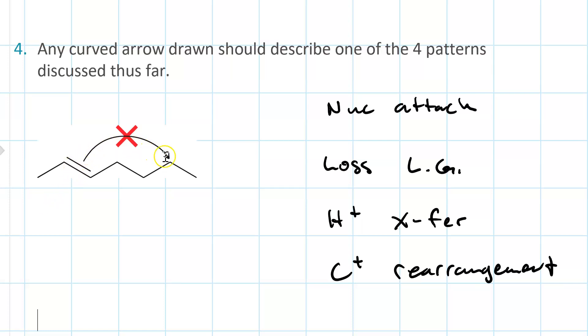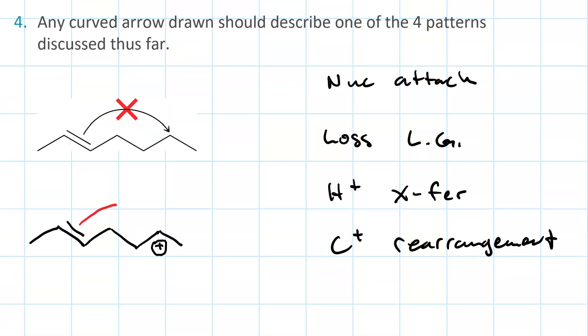Now, this curved arrow is no good because it's exceeding the octet on this carbon. However, it could be normal nucleophilic attack if this were a carbocation. So, if we had a carbocation here, this arrow would represent nucleophilic attack.